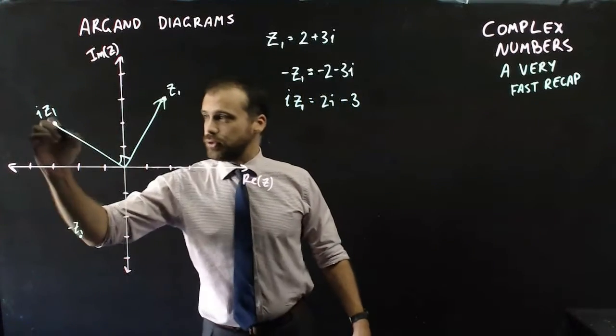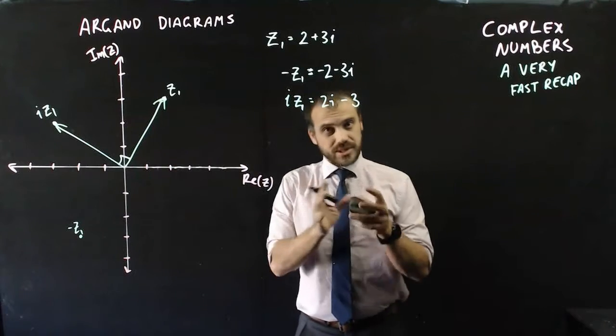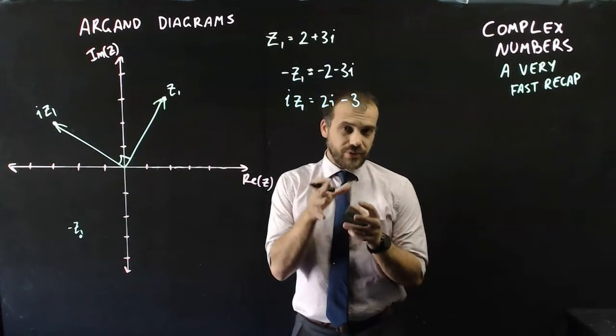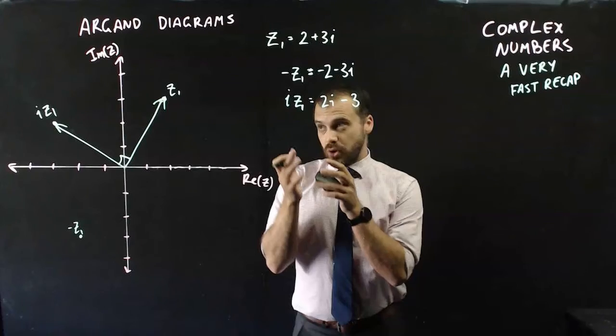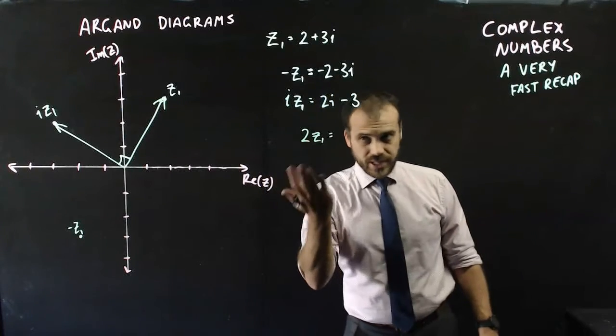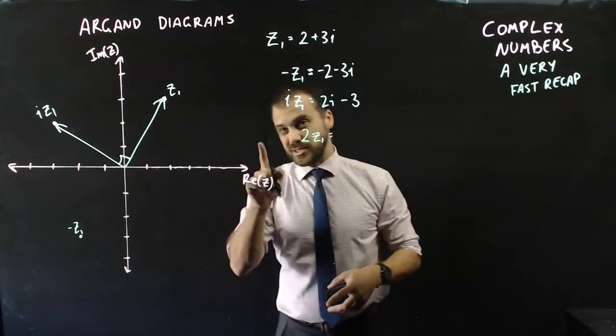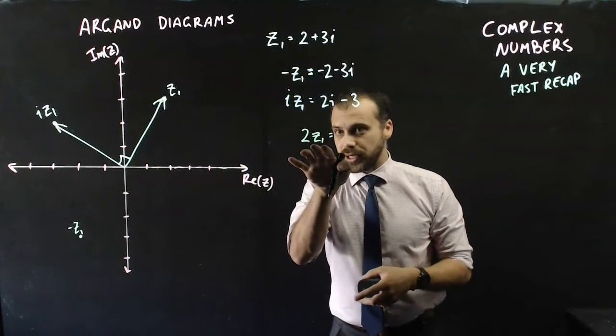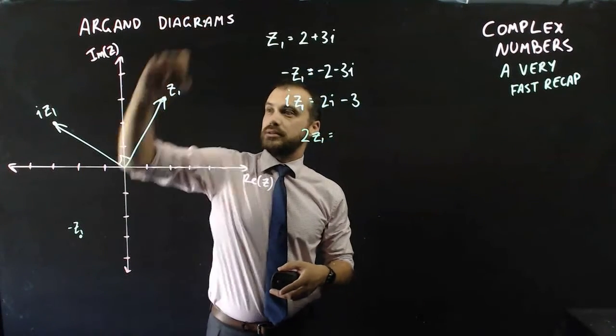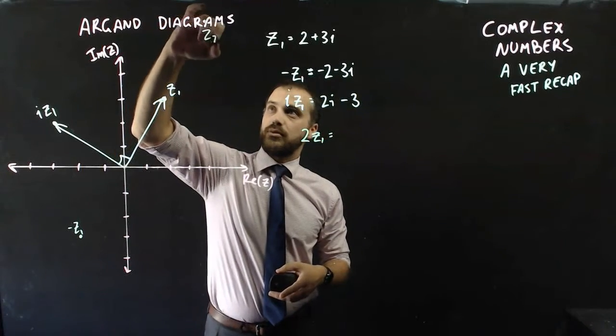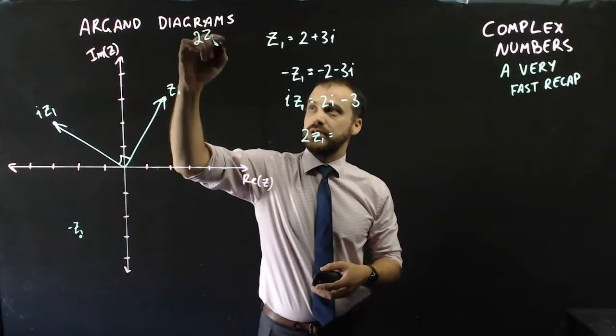Now, these feel and look a lot like vectors, which means that we can kind of treat complex numbers as vectors, which means that some of the geometric interpretations of operations also apply here. If you were to take a vector and multiply it by 2, it would mean you were making it twice as long. If you take a complex number and multiply it by 2, it also means that you're making it twice as long. And somewhere up there is 2z1.